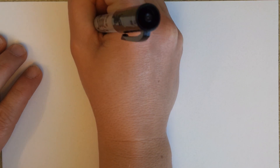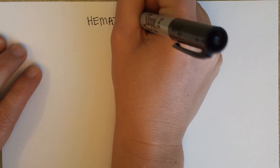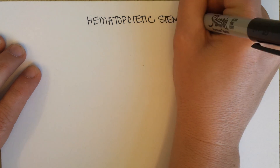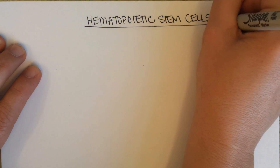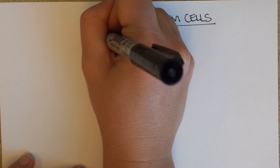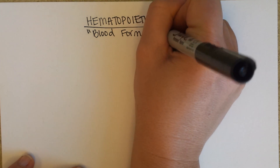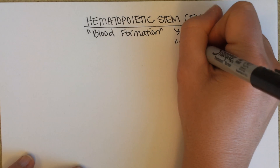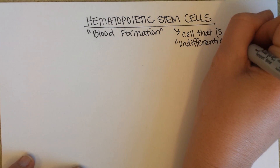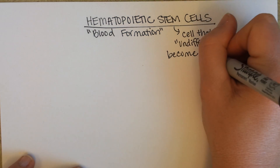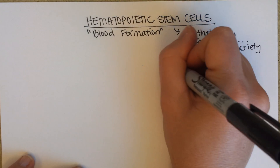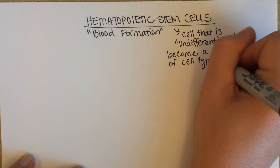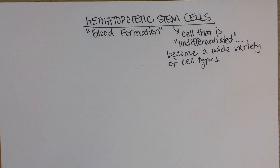We're going to look on this page at stem cells, and specifically hematopoietic stem cells, and how blood cells form. The word 'hema' means blood and 'poiesis' means formation. A stem cell is a cell that is undifferentiated — it can become a wide variety of cell types. In this case, the stem cells we're looking at differentiate into one of a variety of kinds of blood cells.